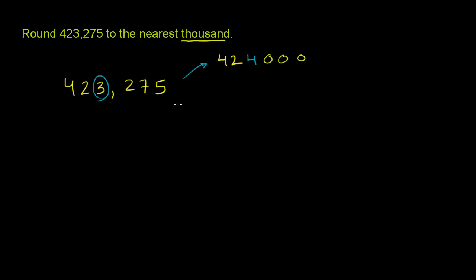And if we wanted to round down, we would go to 423,000. We would get rid of the 275. So this is our choice: round up to 424,000 or round down to 423,000. And to figure it out,